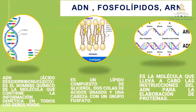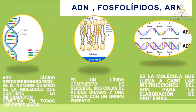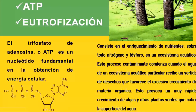ADN, fosfolípidos y ARN. ADN, ácido desoxirribonucleico, es el nombre químico de la molécula que contiene la información genética en todos los seres vivos. Fosfolípido: es un lípido compuesto de glicerol, dos colas de ácido graso y una cabeza con un grupo fosfato. ARN: es la molécula que lleva a cabo las instrucciones del ADN para la elaboración de proteínas.